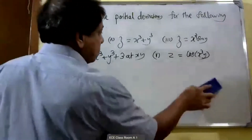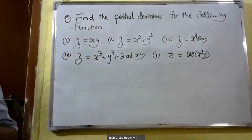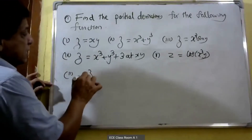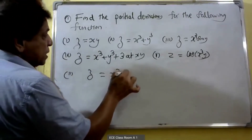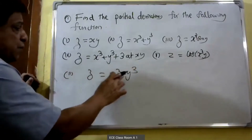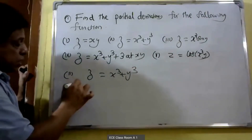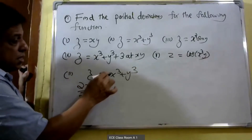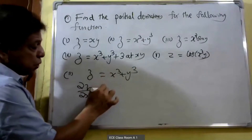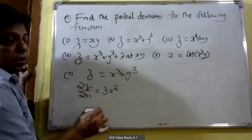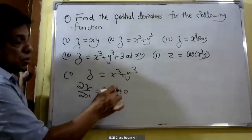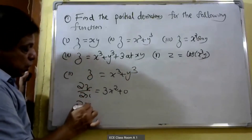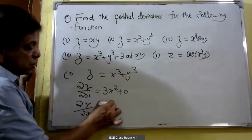Then we take the second problem. z is equal to x³ plus y³. We partially differentiate with respect to x, that is ∂z/∂x. Derivative of x³ is equal to 3x², and y³ treated as constant gives 0. Therefore ∂z/∂x is equal to 3x².